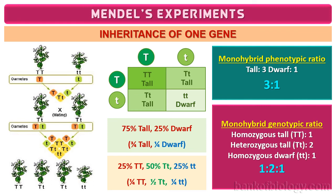Now let us analyze the genotypes of the four combinations. Capital T capital T appears once, capital T small t appears twice, and small t small t appears once. Thus, based on genotype, the ratio is 1:2:1 — this is called the monohybrid genotypic ratio. In percentage: 25% capital T capital T, 50% capital T small t, and 25% small t small t. In fractions: one-fourth homozygous tall, one-half heterozygous tall, and one-fourth homozygous dwarf.